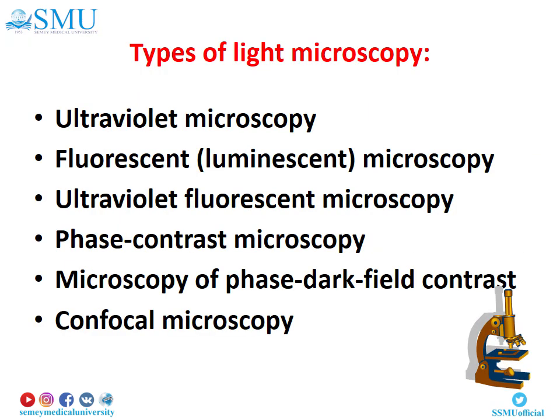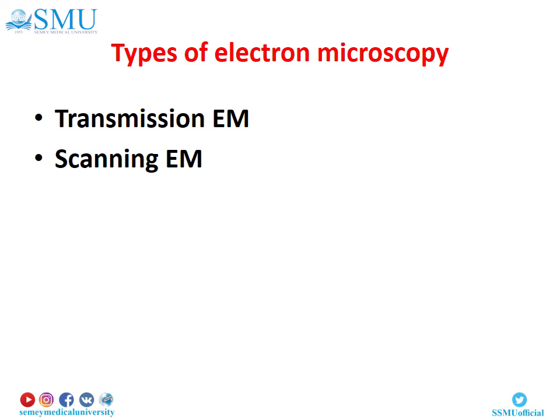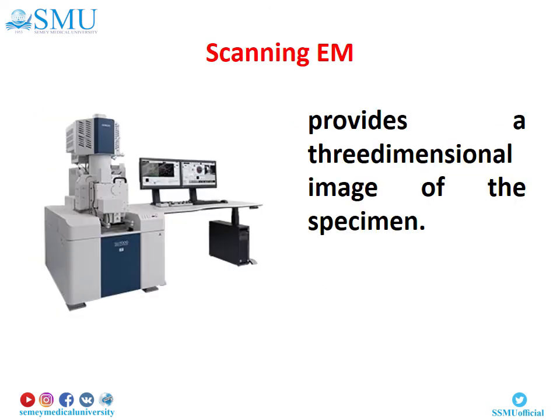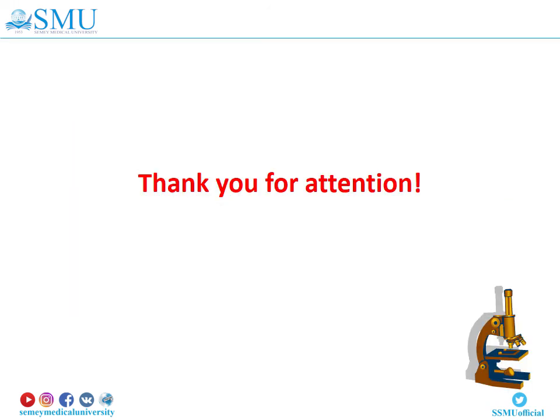Types of light microscopy include ultraviolet, luminescent, ultraviolet fluorescent microscopy, phase contrast microscopy, dark field contrast microscopy, and confocal microscopy. Types of electron microscopy: two types are present – transmission and scanning. Transmission electron microscopy uses much thinner sections compared with light microscopy and requires heavy metal precipitation techniques rather than water-soluble stains to stain tissues. Scanning electron microscopy provides a three-dimensional image of the specimen. Thank you for your attention.